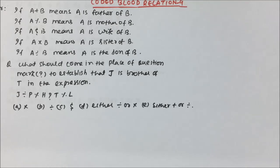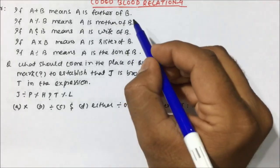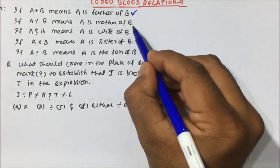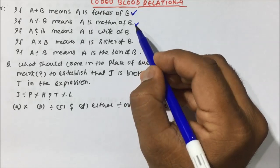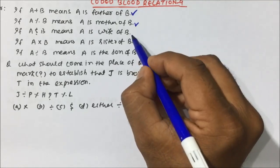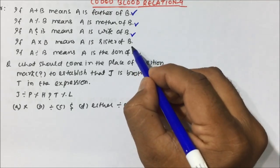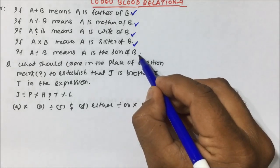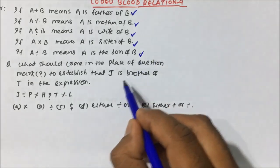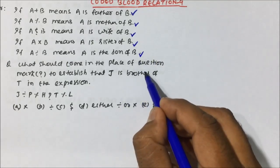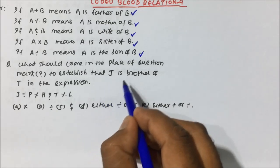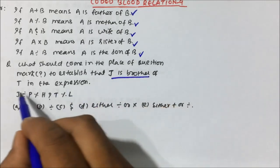Our today's question is one of the very important questions, so let's try to solve it. If A plus B means A is father of B; if A percentage B means A is mother of B; if A dollar B means A is wife of B; if A cross B means A is sister of B; if A divided by B means A is the son of B.